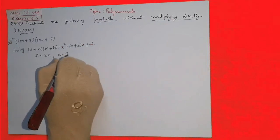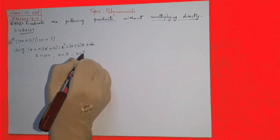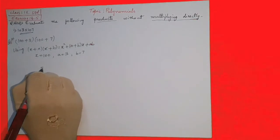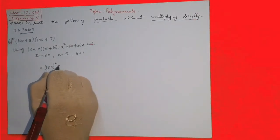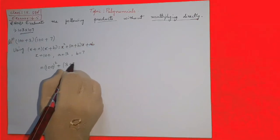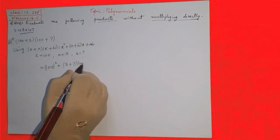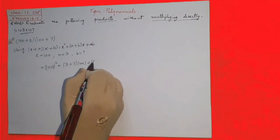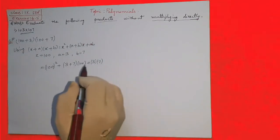So we will write the formula: x square plus a plus b into x plus a into b. Here x is 100, a is 3, and b is 7. Now we have to substitute: x square means 100 square plus a plus b means 3 plus 7 into 100 plus 3 into 7.